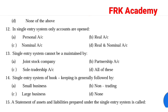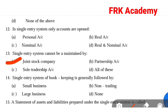Question 13: Single entry system cannot be maintained by. Option A: joint stock company. Option B: partnership. Option C: sole tradership. Option D: all of the above. Answer: Option A, joint stock company. Single entry system cannot be maintained by a joint stock company.